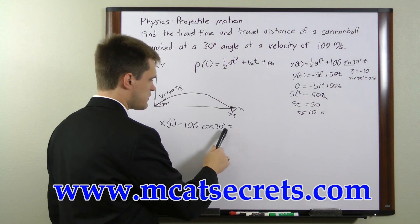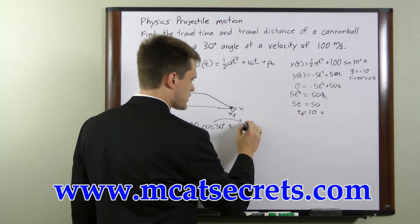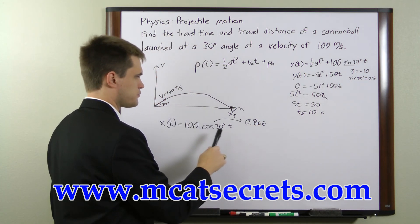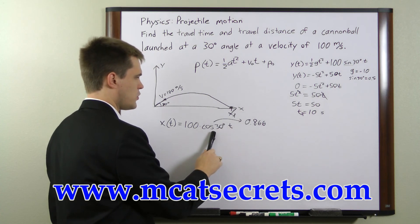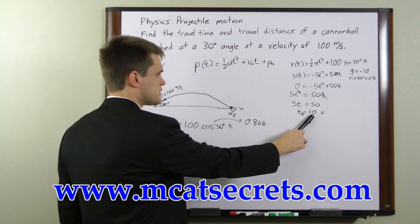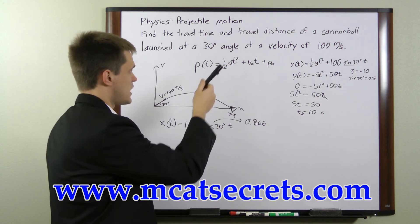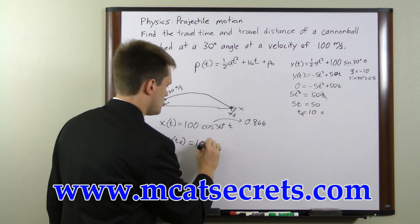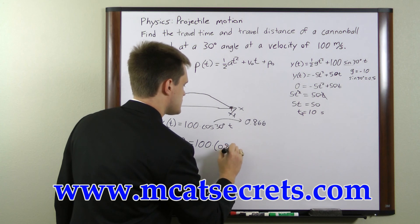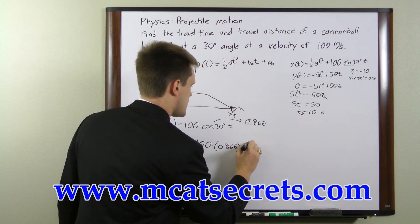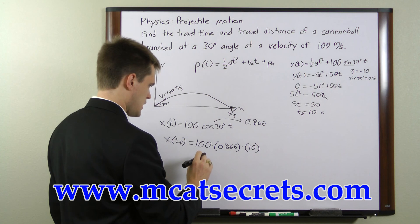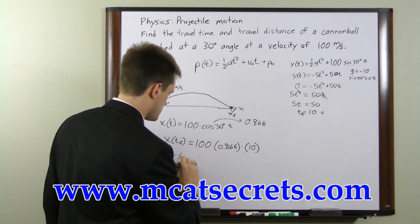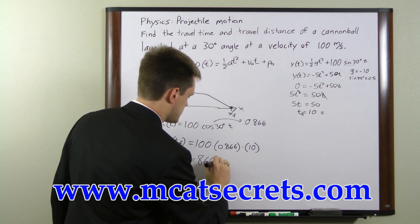The cosine of 30 is approximately 0.866. Substituting in 0.866 for cosine of 30 and 10 seconds for t gives us the travel distance: X at t final equals 100 times 0.866 times 10 seconds, which is 1000 times 0.866, or 866 meters. So our travel time is 10 seconds and our travel distance is 866 meters.